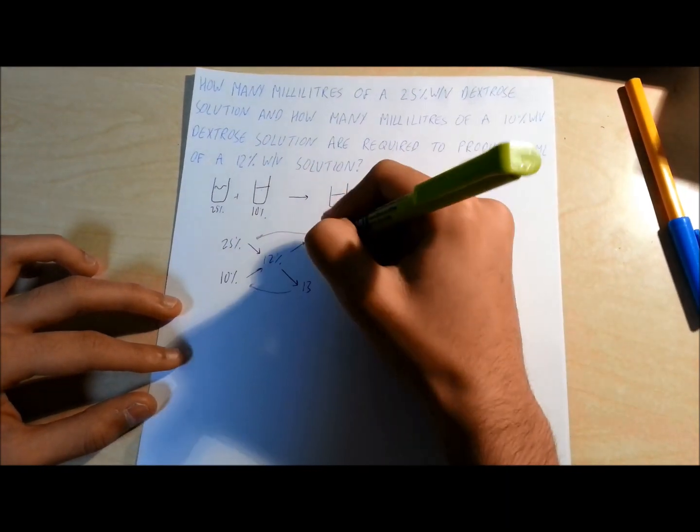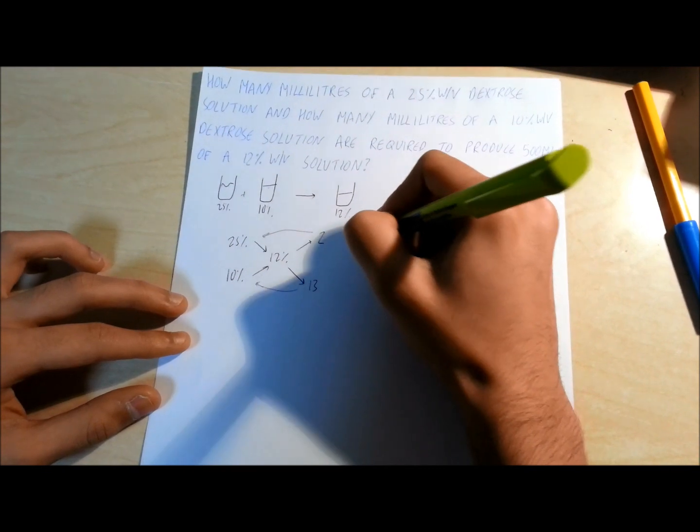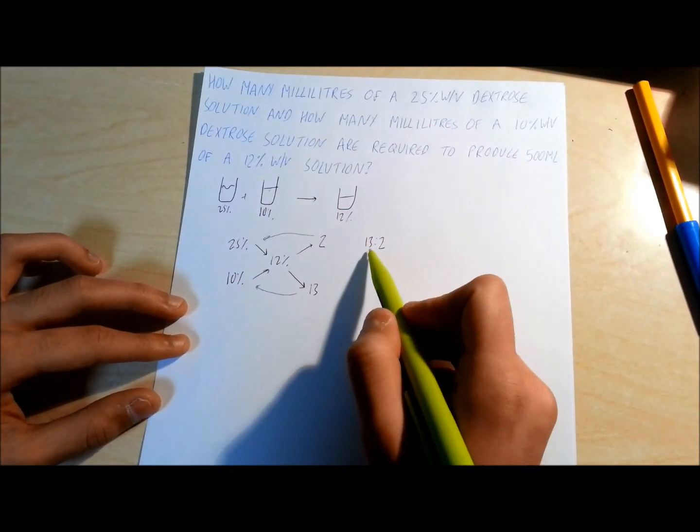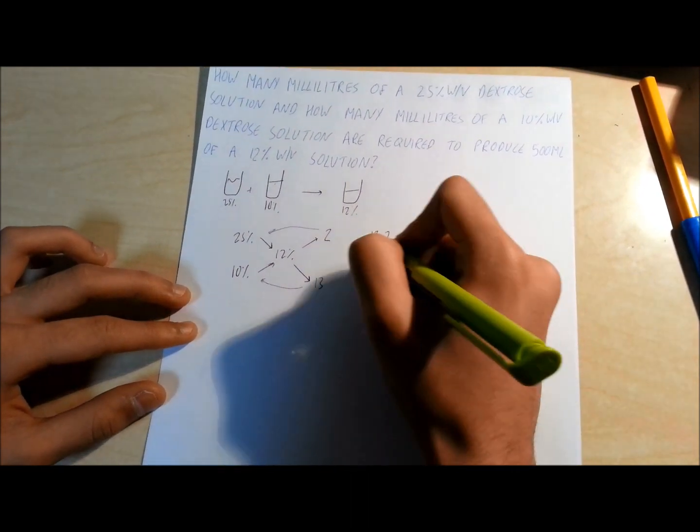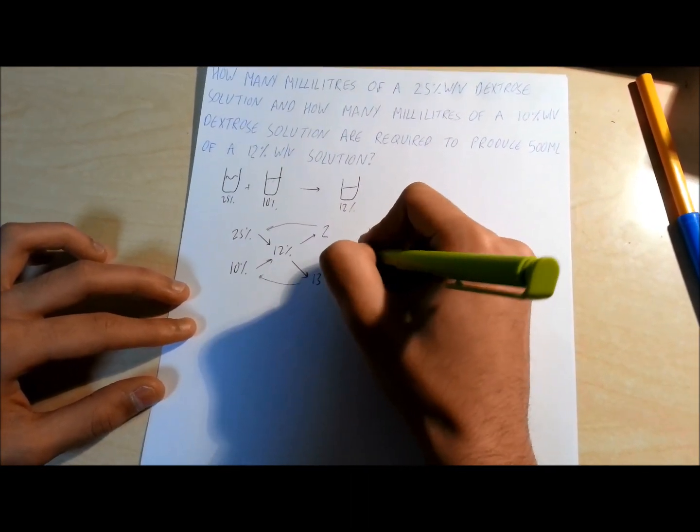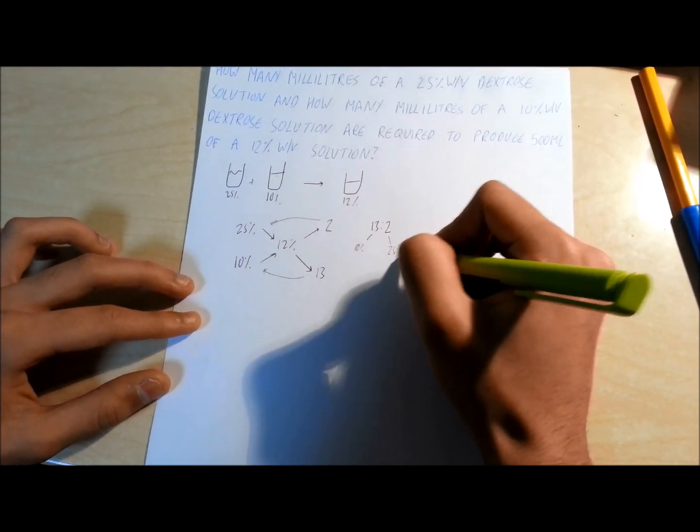Now, this is just in parts. So to make it more clear, this is 13 to 2 parts that we are going to need to make this 12% solution. This 13 being the 10% solution and 2 parts of the 25% solution.